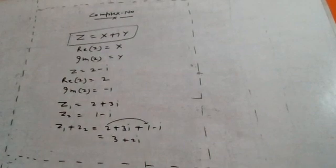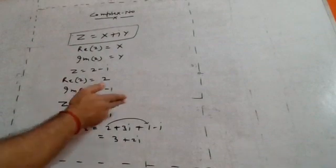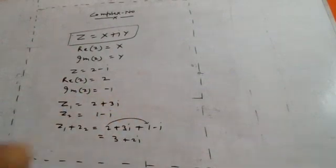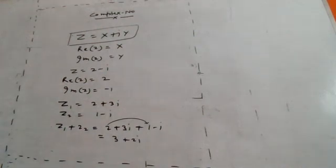Similarly we can do subtraction by subtracting the real part from the real part and the imaginary part from the imaginary part. We will also cover addition, subtraction, and multiplication. Division is the most important part of complex number algebra.